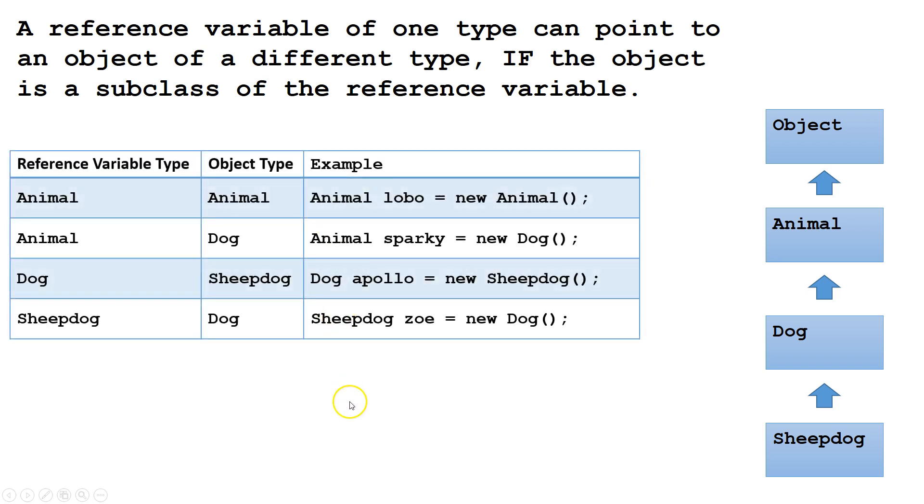So, let's look at some examples. If we had a reference variable of Animal and an object type of Animal, this would be fine. We can always have a reference variable point to an object of the same type.